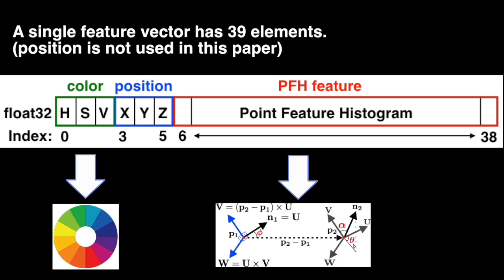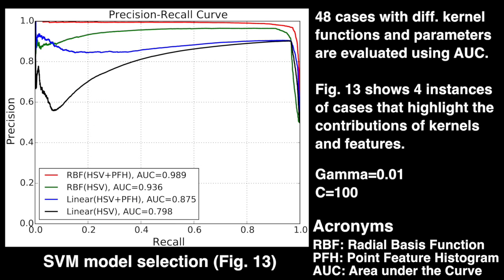Given these 3D datasets of sweet pepper and peduncles, we extract two features: color in HSV space and a geometrical feature named Point Feature Histogram, acronym PFH. A feature vector consists of three elements from color and 33 from PFH. Position feature is recorded but not utilized in this paper. For binary classification, we use a support vector machine that estimates the hyperplane between peduncle and sweet pepper in feature space.